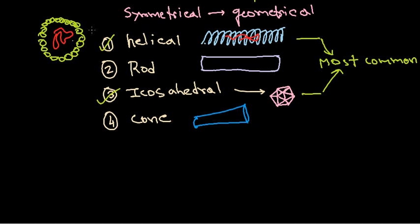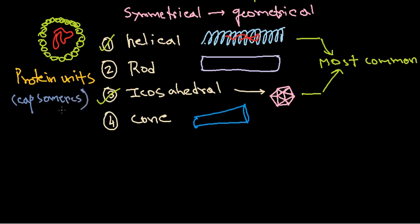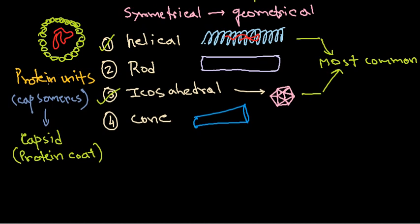The proteins that are arranged to make this kind of structure are called capsomeres. These small protein units are called capsomeres. Those capsomeres are organized and attached to each other to finally produce what we call a capsid — a protein coat surrounding the genetic material.